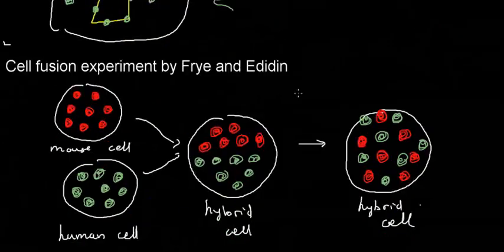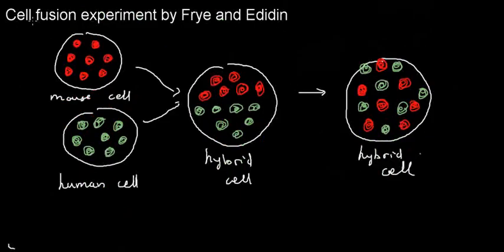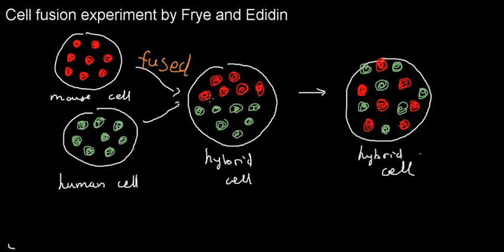Next is the cell fusion experiment — a very sci-fi type experiment. Two scientists took a mouse cell and a human cell and labeled their respective membrane proteins with fluorescent dyes of different colors. They then fused these two cells into one cell. At time zero (T0), the time of fusion, there was almost complete separation between where the mouse cell proteins and the human cell proteins were located.